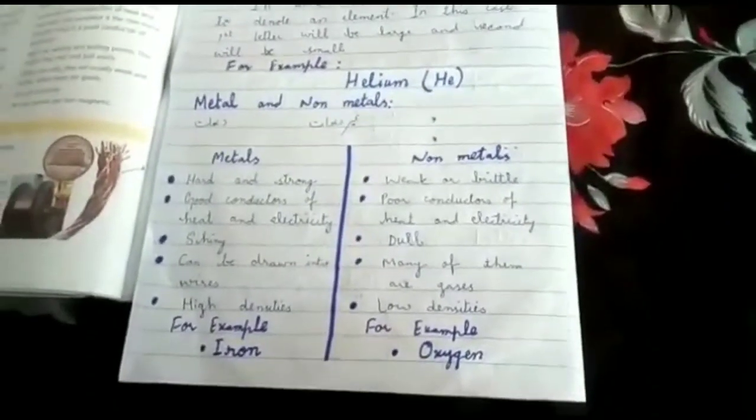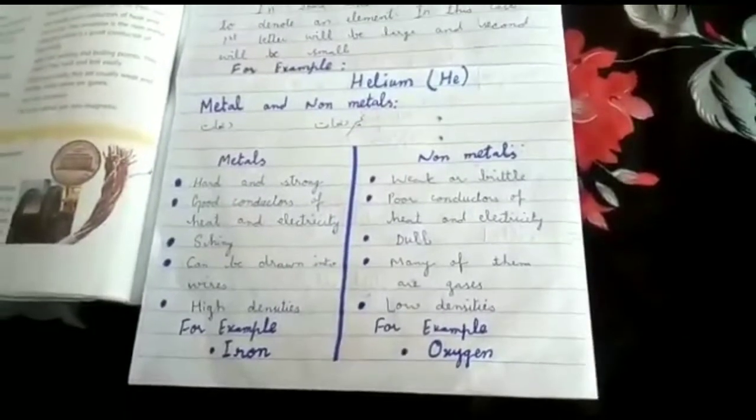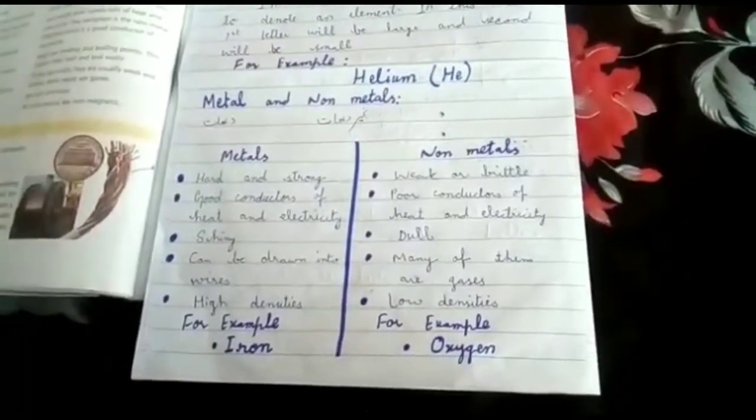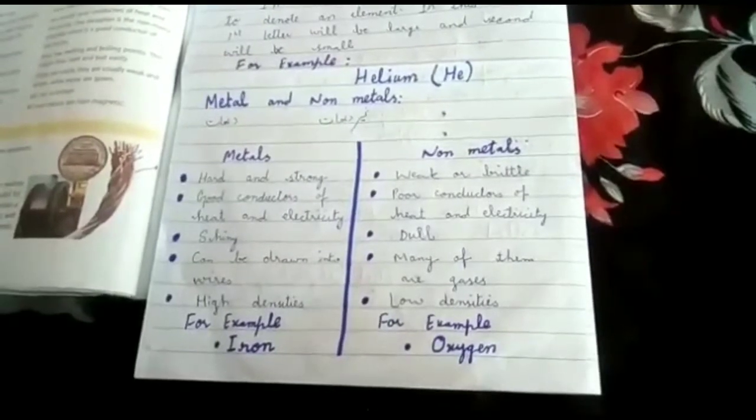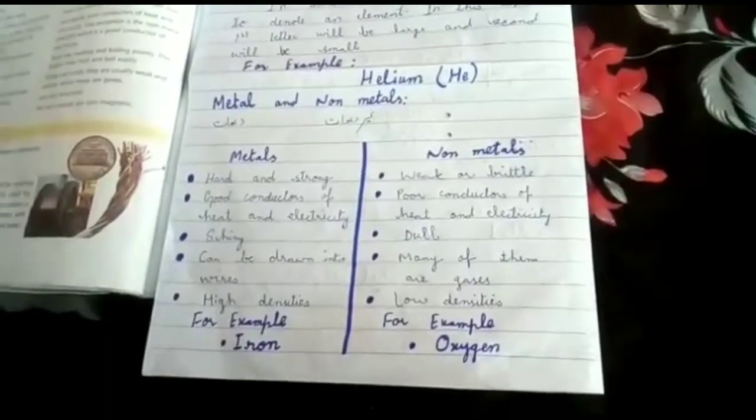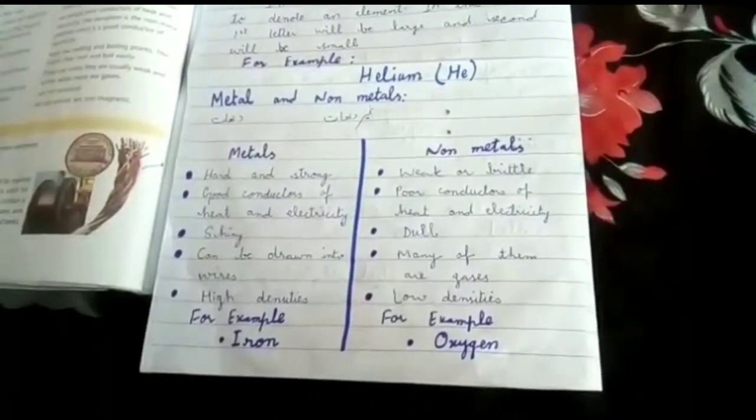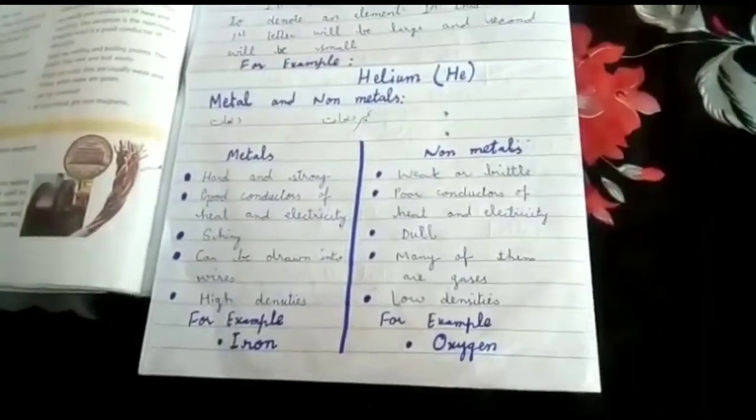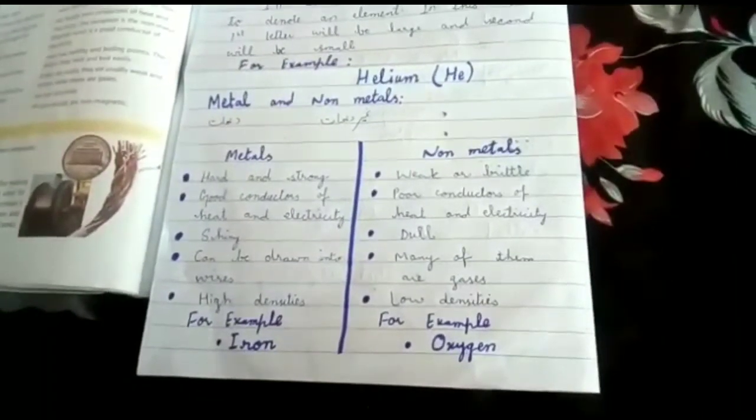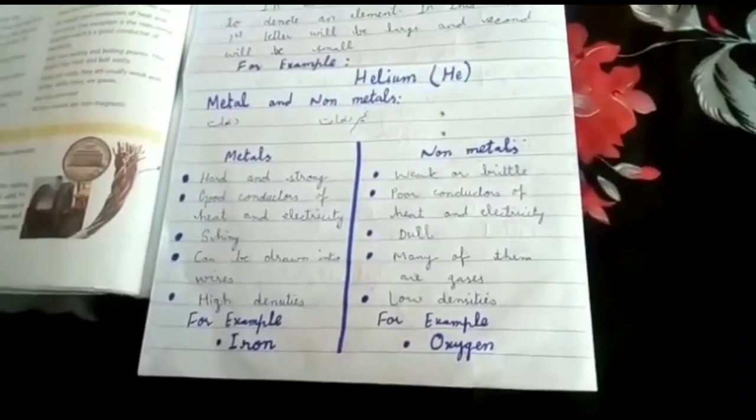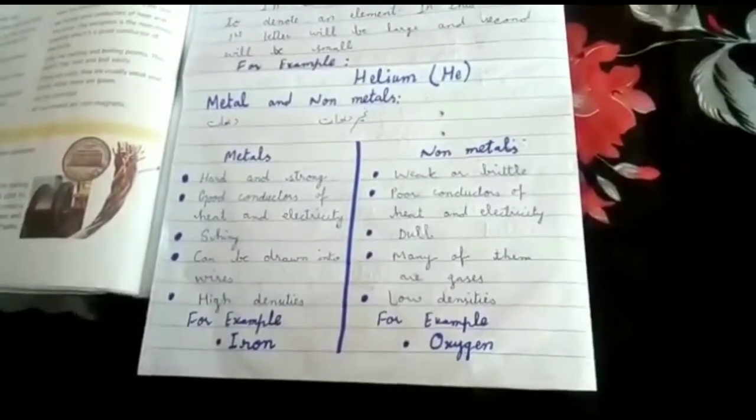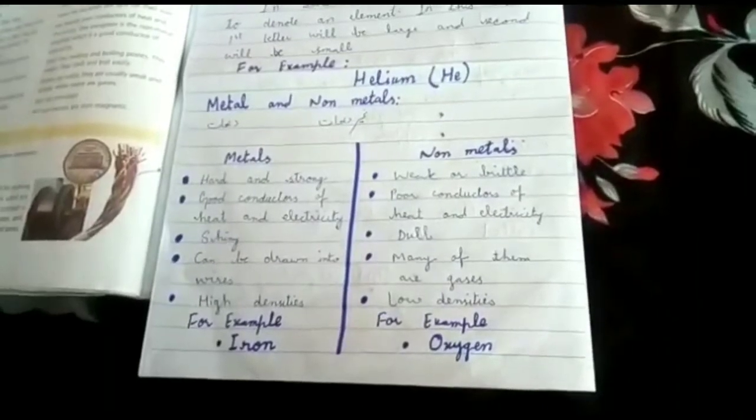This metal can conduct electricity - you can see that iron conducts current easily. This is a special property. It is hard - you cannot easily break the loha. It is also shiny. If we go to the welders when they are cutting, luster is produced. Luster means shine.